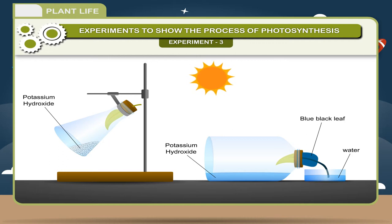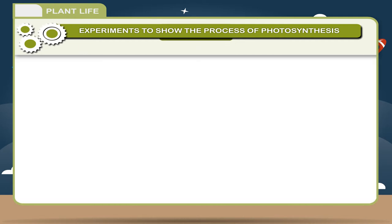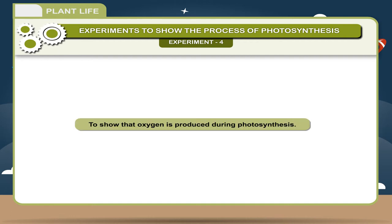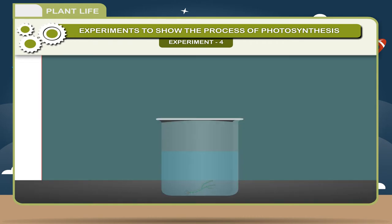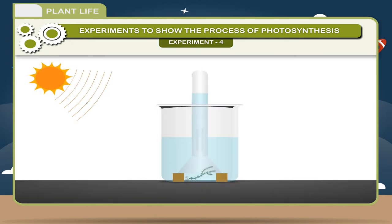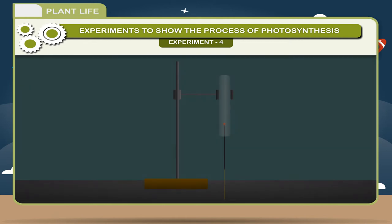Experiment 4: To show that oxygen is produced during photosynthesis. Place some water plants, Elodea or Hydrilla, in a beaker containing pond water and cover them by a short-stemmed funnel. Invert a test tube full of water over the stem of the funnel. Ensure that the level of water in the beaker is above the level of stem of the inverted funnel. Place the apparatus in the sun for a few hours. Bubbles of the gas will collect in the test tube. Test the gas in the test tube. A glowing splinter bursts into flame which shows the presence of oxygen.